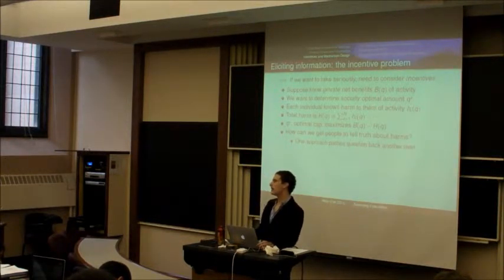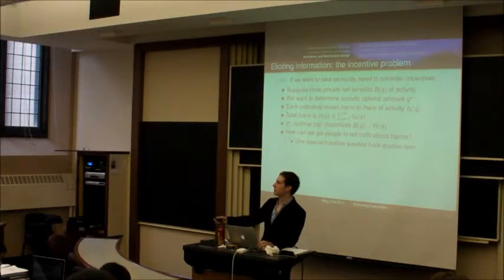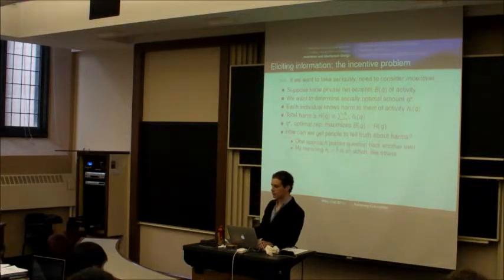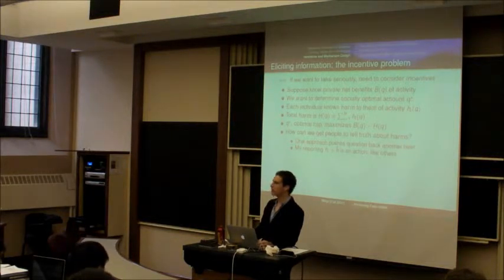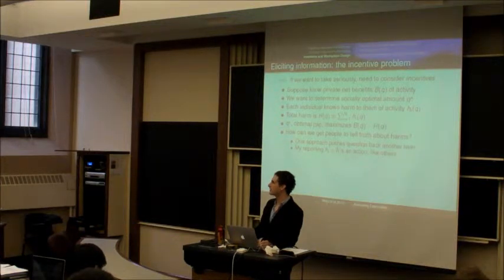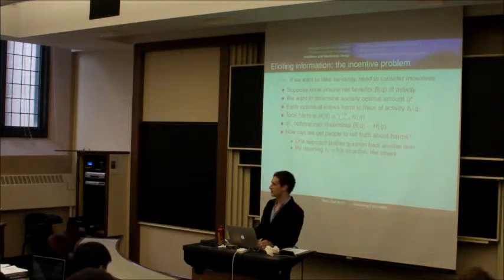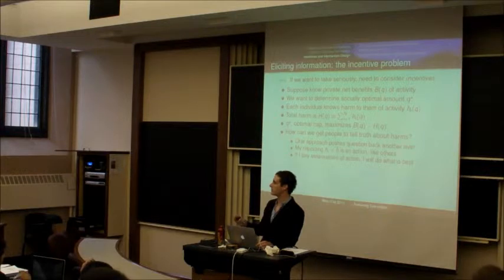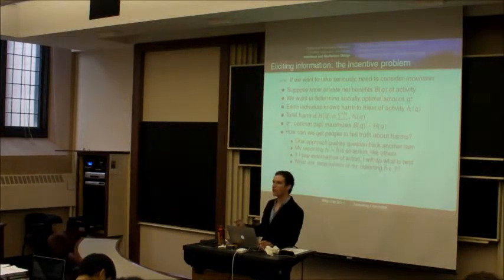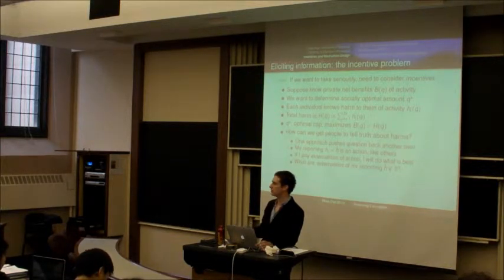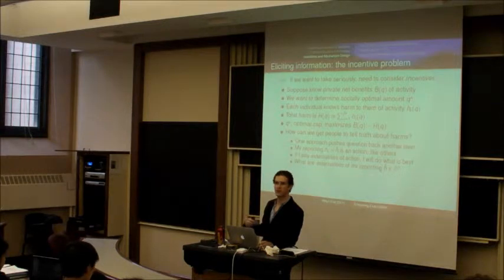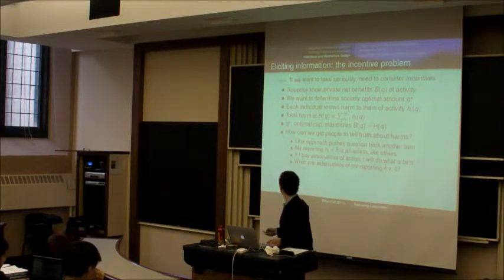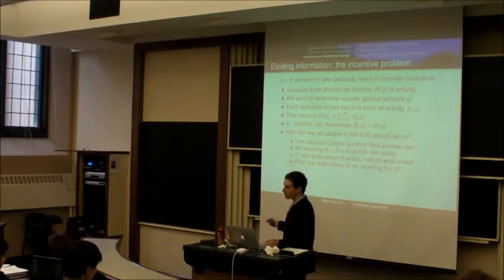Now one way to think about this is just to push the problem back one layer, which is to say if I report a particular value of my harm, that's really an action that I'm taking because that is going to influence how much of the activity is going to occur. And so you can make me pay the externalities that are caused by my saying I'm harmed by something you're doing. If I pay all the externalities then I'll have an incentive to tell the truth, just as if I pay the externalities I have an incentive to do the action that's in society's best interest. So the question is what are the externalities created by my reporting some particular value h-hat rather than that I have no harm?